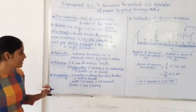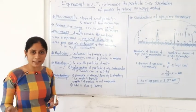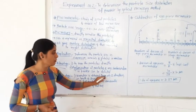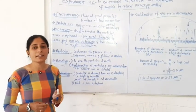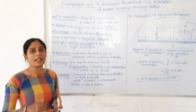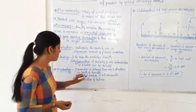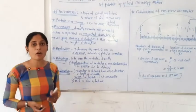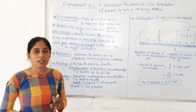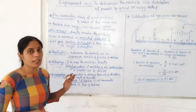Now the disadvantages of optical microscopy. First disadvantage — the diameter is obtained from only two directions: length and breadth. The depth of the particle cannot be measured. This is a disadvantage. The second disadvantage — this method is very slow and tedious; it requires a very long time. This is the basic introduction of the optical microscopy method.